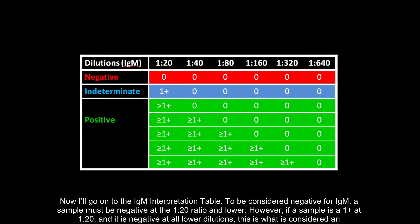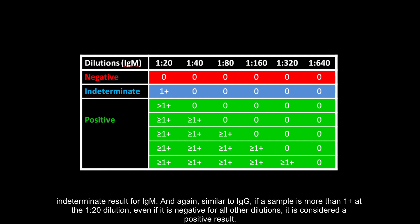However, if a sample is a 1 plus at 1 to 20 and is negative at all lower dilutions, this is considered an indeterminate result for IgM. And again, similar to IgG, if a sample is more than 1 plus at the 1 to 20 dilution, even if it is negative for all other dilutions, it is considered a positive result.